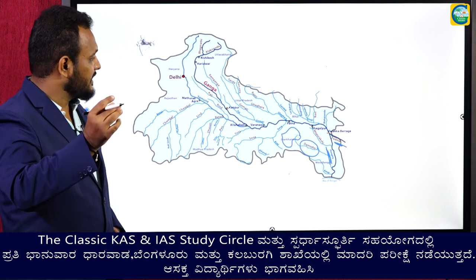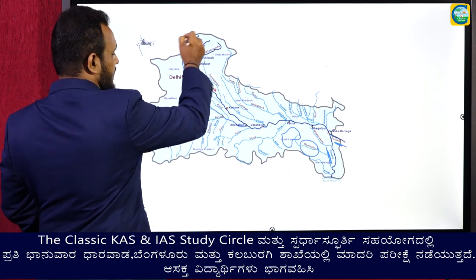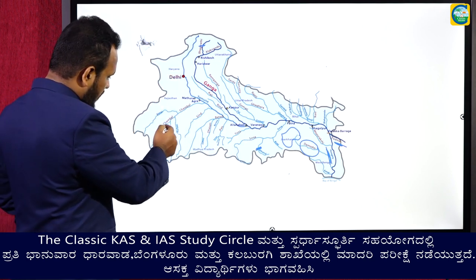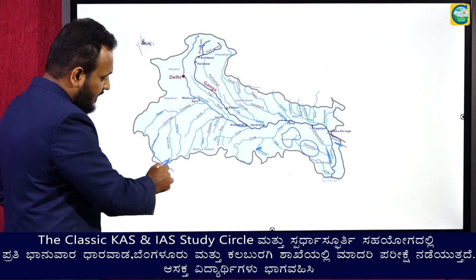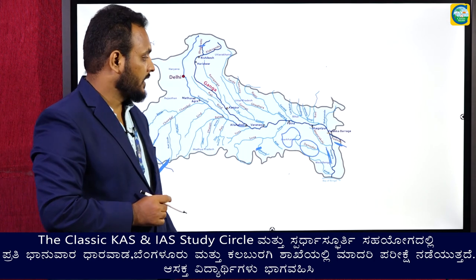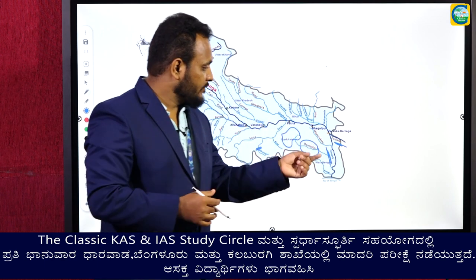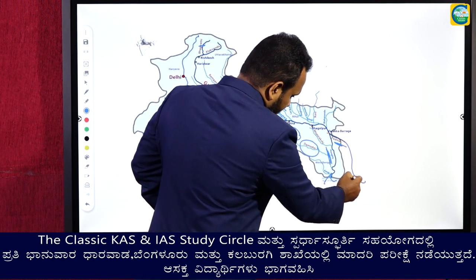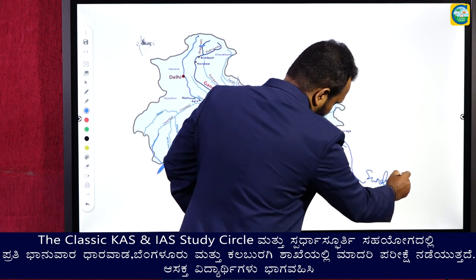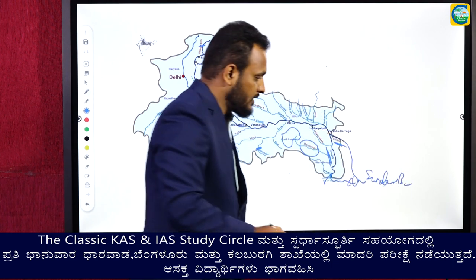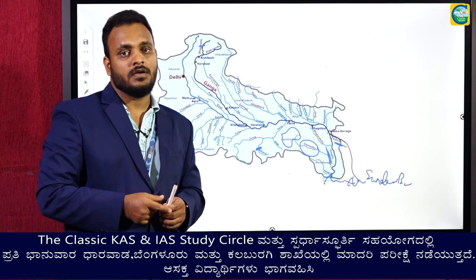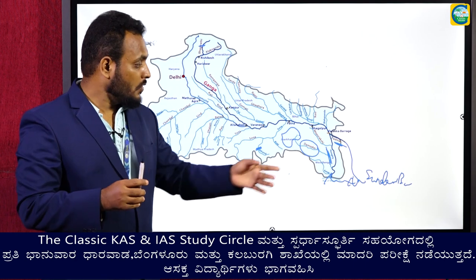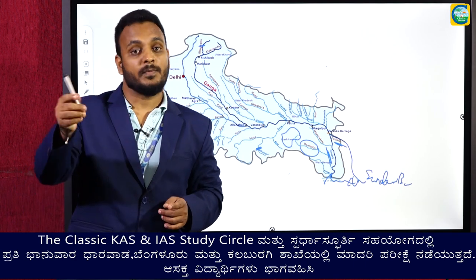The important dams include Tehri Dam on Bhagirathi, Rihand Dam on Son, and Gandhi Sagar Dam on Chambal in Madhya Pradesh. The mouth of the river forms a delta called Sundarbans Delta, which is very famous for mangroves and wildlife, and is recognized as Sundarbans National Park.